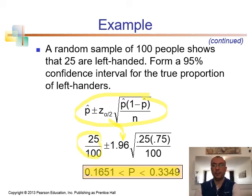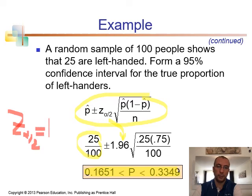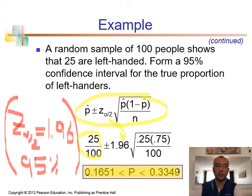To sum up, in this chapter we looked at how to calculate confidence intervals for the population mean and population proportion. If the sample size is large enough, you can use the z-value, and the z-value depends on the confidence interval chosen. The most commonly used z-value is z-alpha-over-2, and for 95 percent confidence the z-value is 1.96. So if you have a 95 percent confidence interval, the z-value will be 1.96. I'll see you in the next lecture.